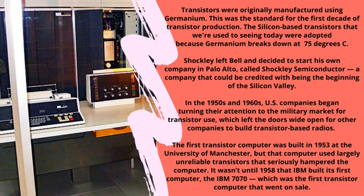The first transistor computer was built in 1953 at the University of Manchester, but it used largely unreliable transistors that seriously hampered its performance. It wasn't until 1958 that IBM built its first transistor computer, the IBM 7070, which was the first transistor computer to go on sale.